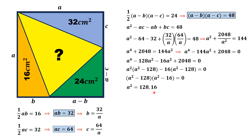First we focus on the smaller value, which is 16. We can see that 16 is the area of the orange triangle, which is only a portion of the whole square. So the area of the square cannot be 16, and thus this value is rejected. The only accepted solution for a² is 128.